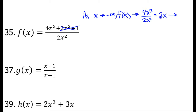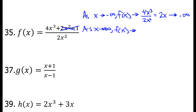Imagine that this were 2 times negative 1 million — then this would be negative 2 million. So, as x approaches negative infinity, 2 times negative infinity is still going to be negative infinity. As x approaches positive infinity, it's a similar story. f of x approaches 4x to the third power over 2x squared, which simplifies down to 2x. As x approaches positive infinity, I'm going to have a very large positive number, so that's positive infinity.